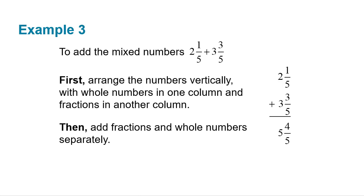Mixed numbers: as long as they have the same denominator for the fractional part, we can add very easily. You can just add the whole numbers — two plus three is five — then add the fractional parts: one-fifth plus three-fifths is four-fifths. And you're done. Nice and simple.